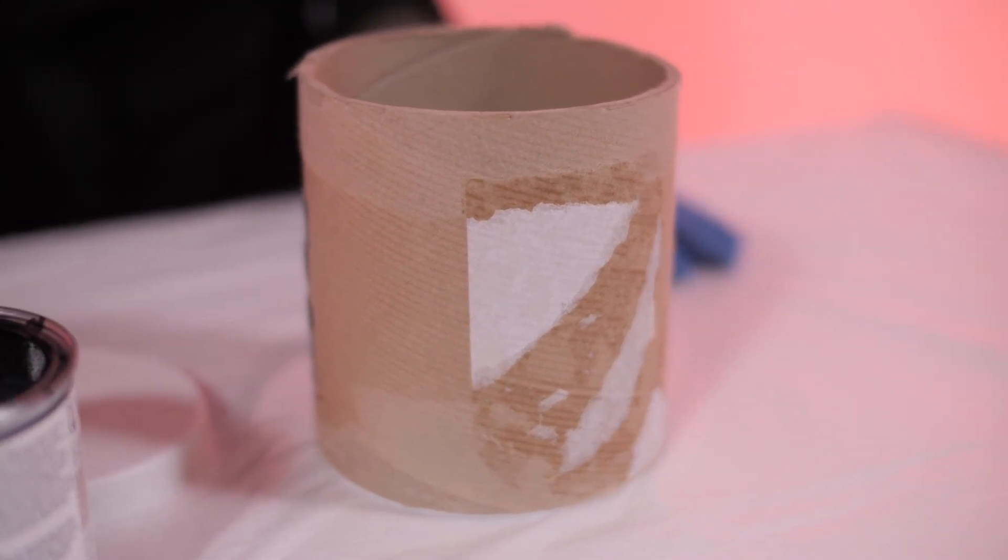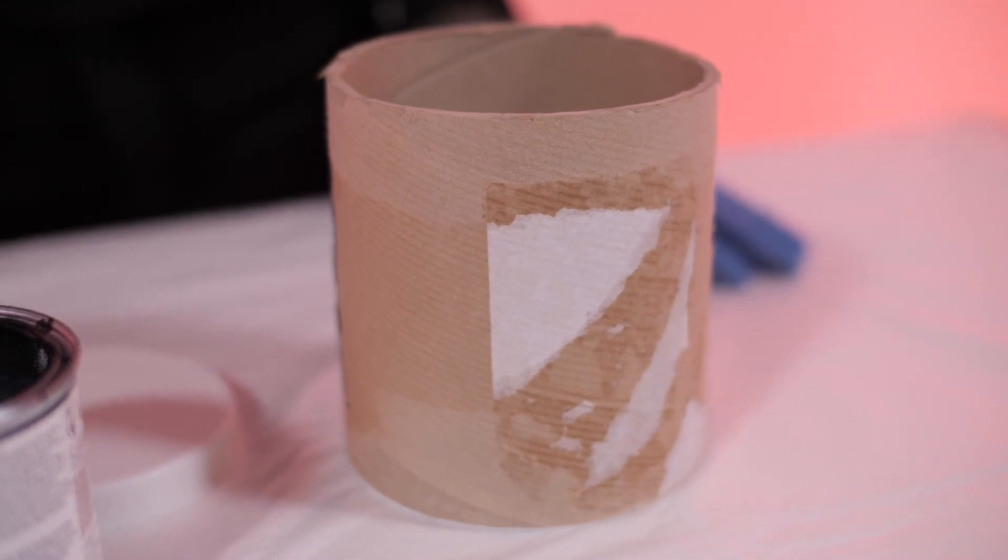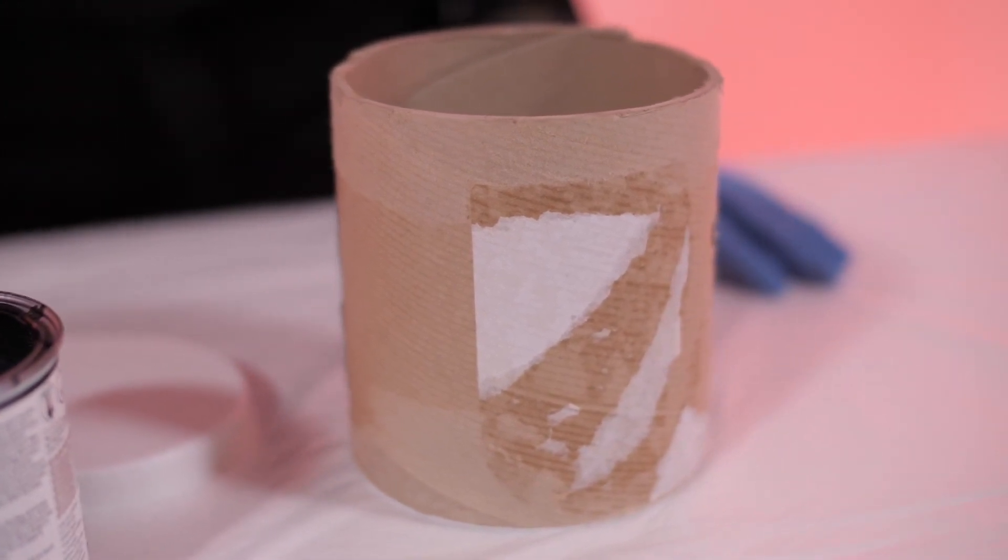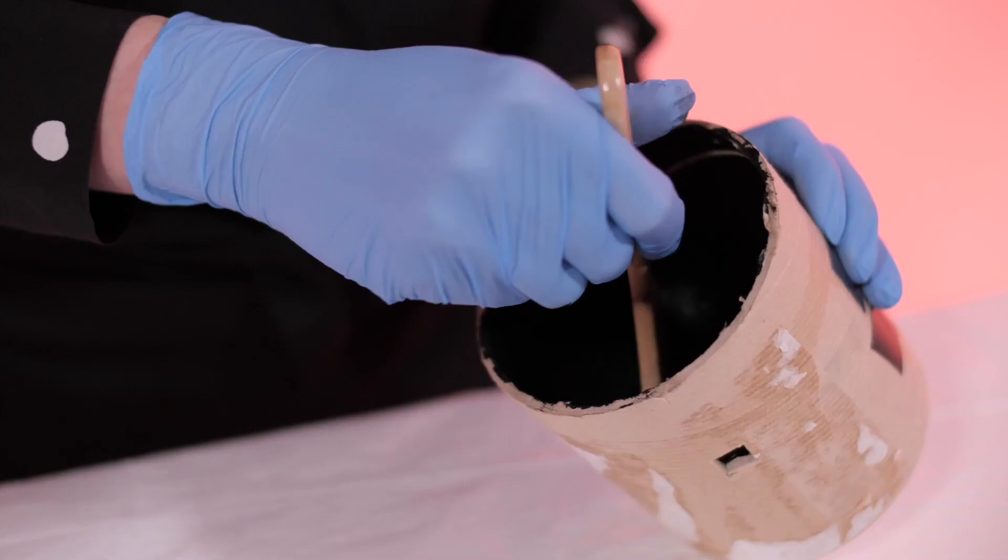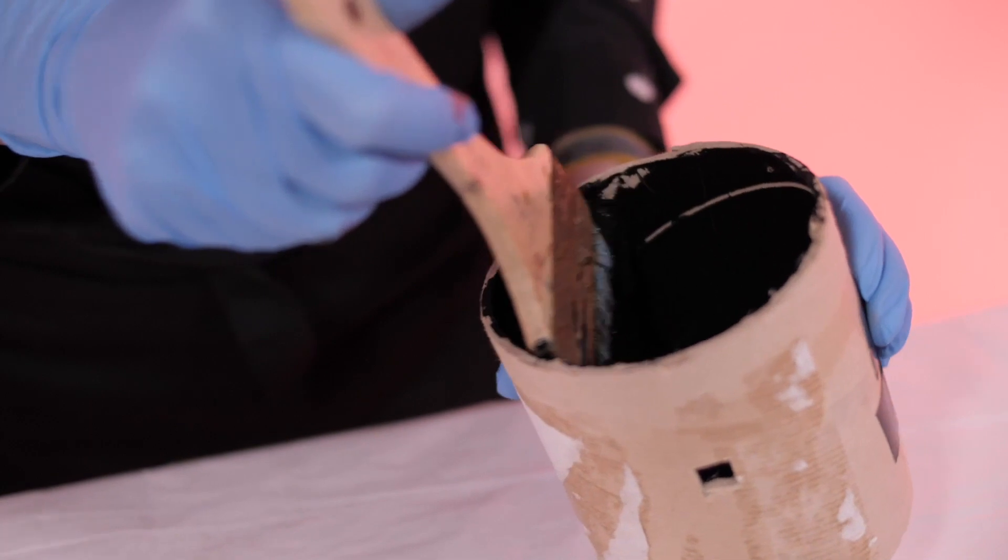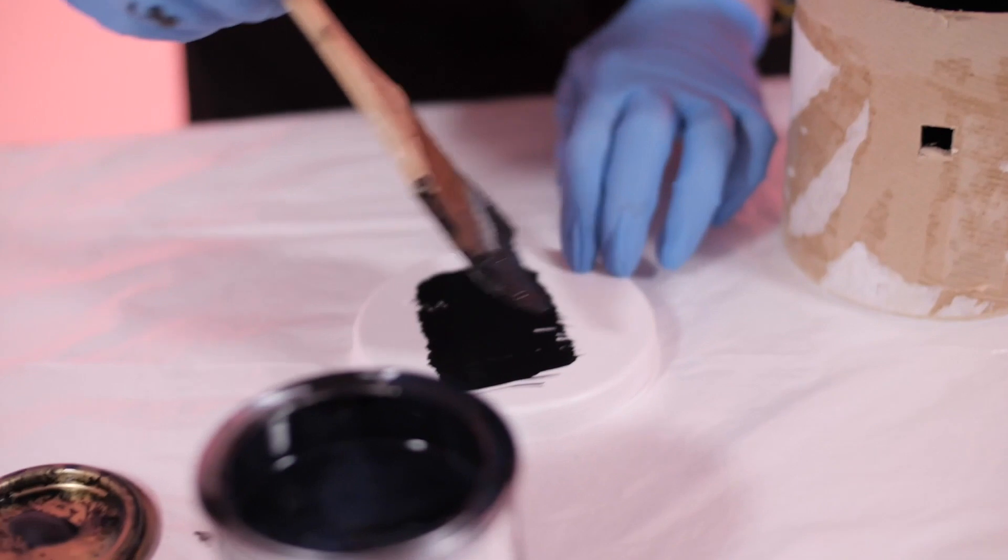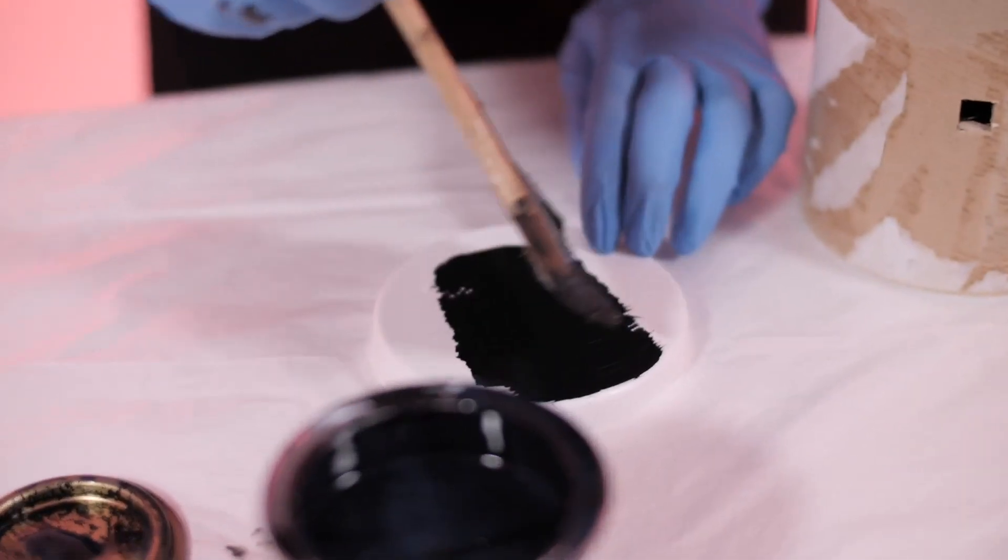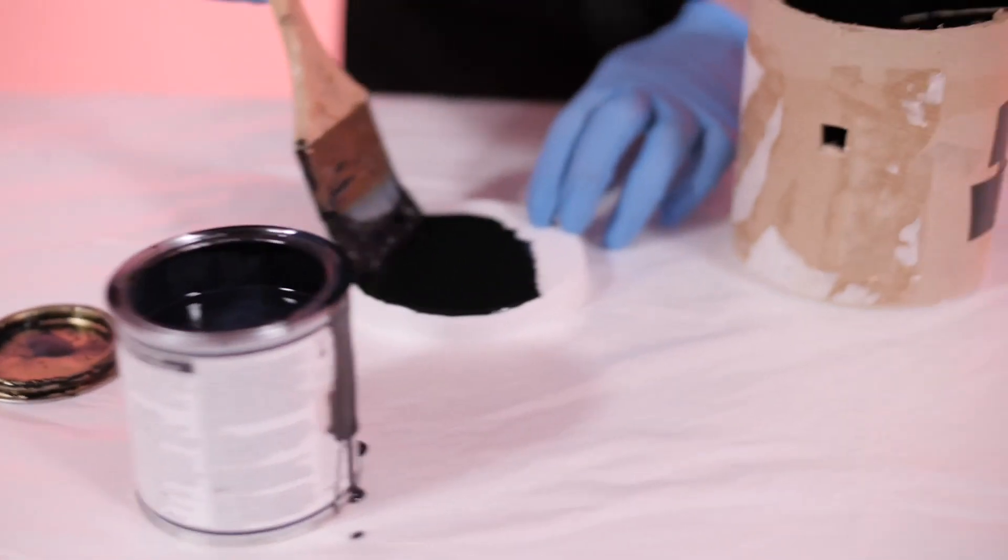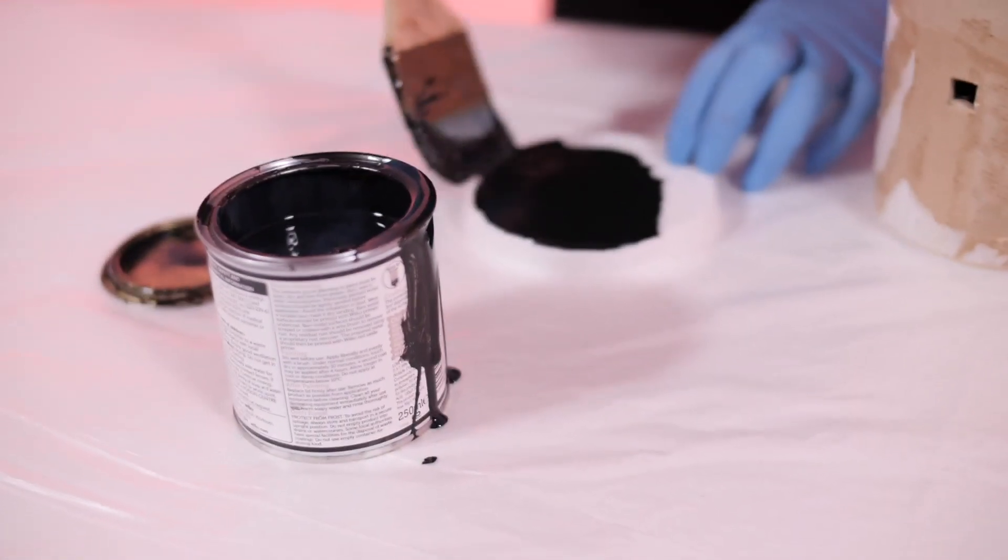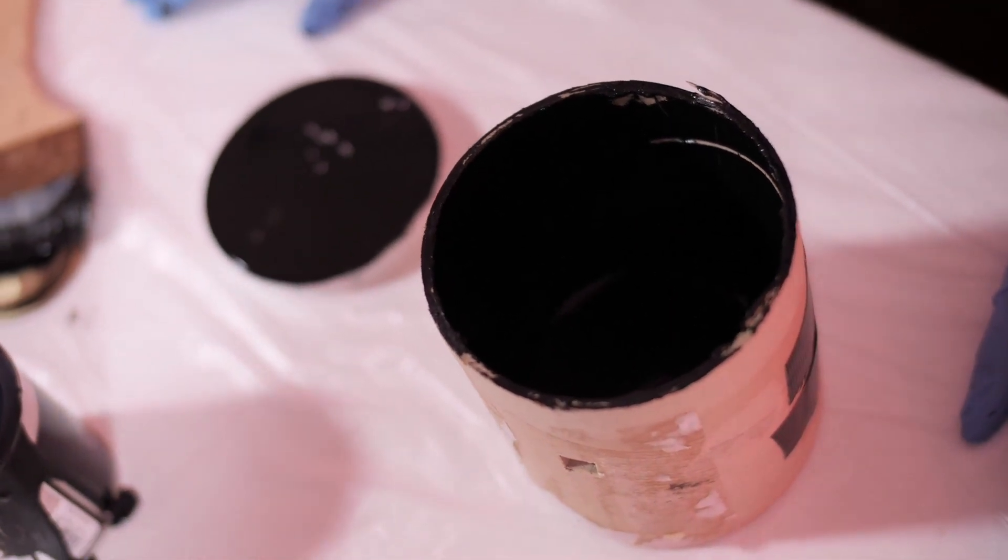The first thing that you should do is to cut a hole into your cylinder. The hole should be around two to three centimeters square or rectangular. You should then paint your cylinder black inside. Make sure you have completely covered the inside.